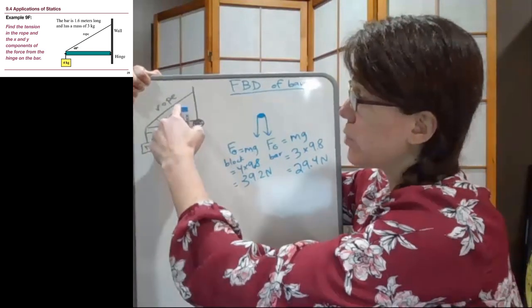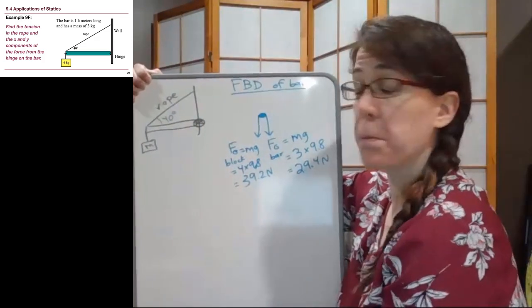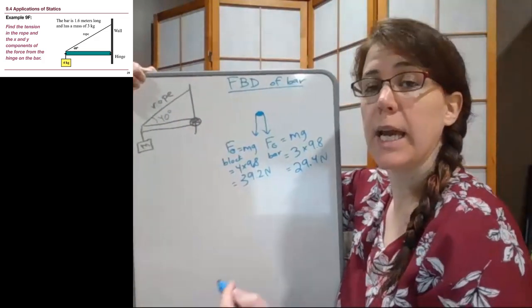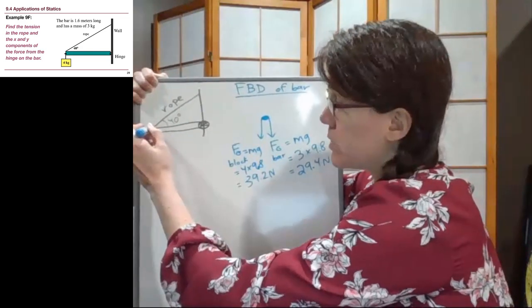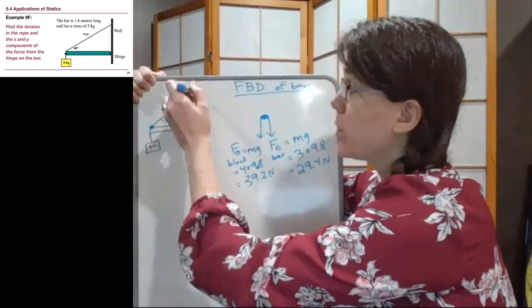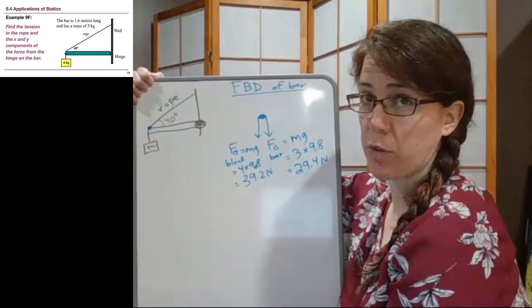We also see the rope, and rope means tension, and tension is going to pull away from where it is attached to the bar. We're not drawing a free body diagram of the wall. We are drawing a free body diagram of the bar.